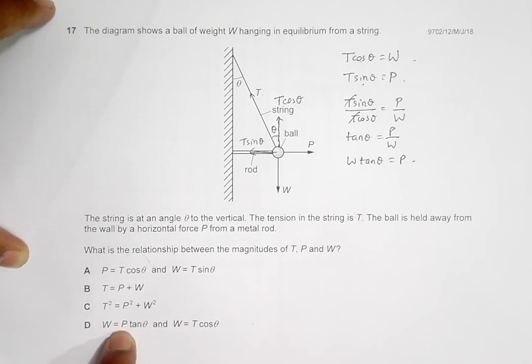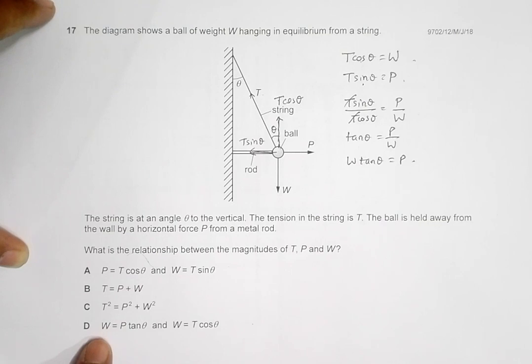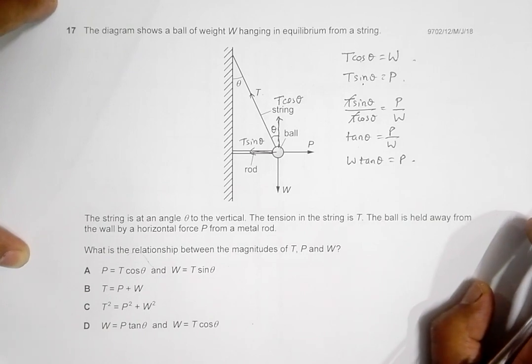As previously stated, we already have this condition. Let us see if this condition is there, but this is not true here because we have P equals W tan theta. Here we have W equals P tan theta, and similarly none of the other conditions apply here.